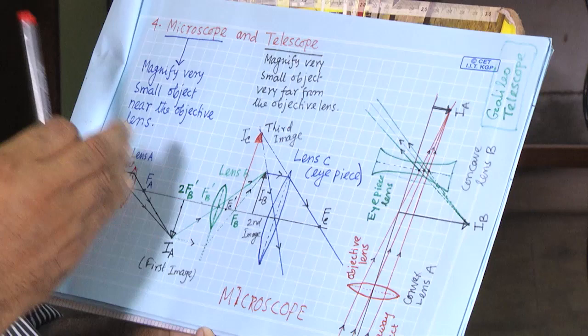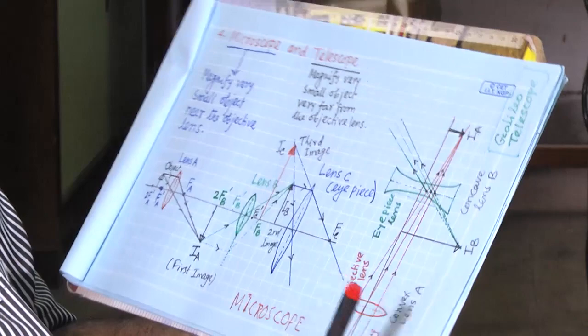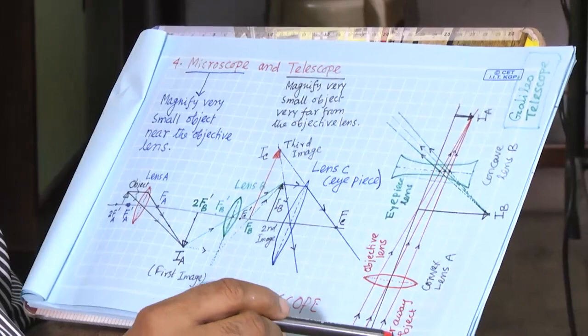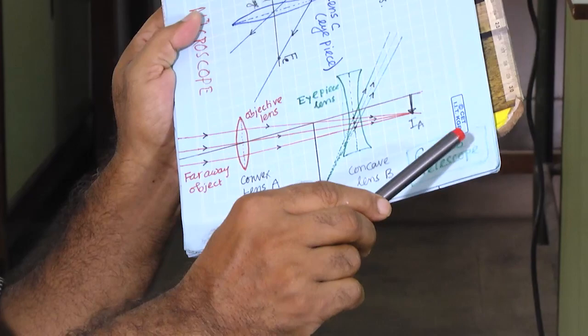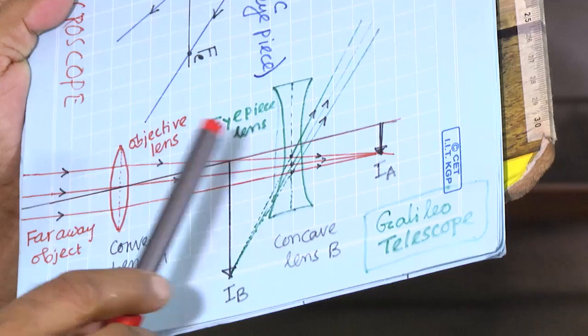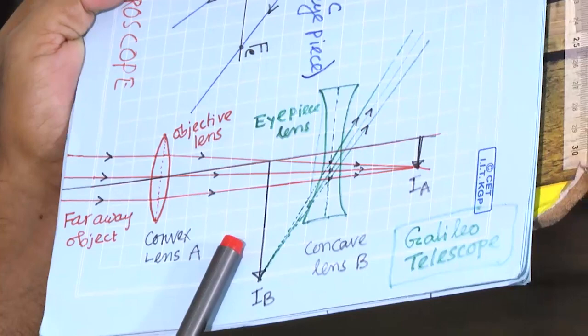Similarly for the telescope — its purpose is to see distant and small objects, like stars. From the ray diagram: this is a Galilean telescope using just two lenses, though modern telescopes have many lens combinations — the principle is the same. From far away, parallel rays come in, not parallel to the principal axis but making some angle, and you get the image of the far-away object here.